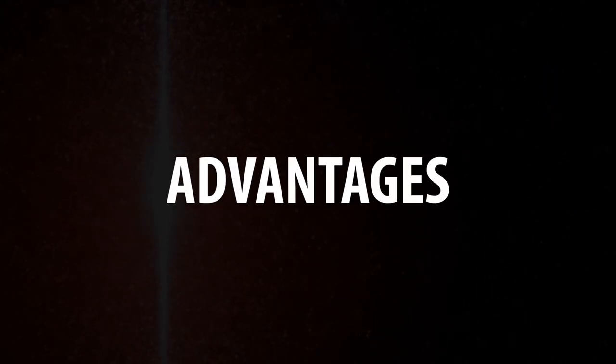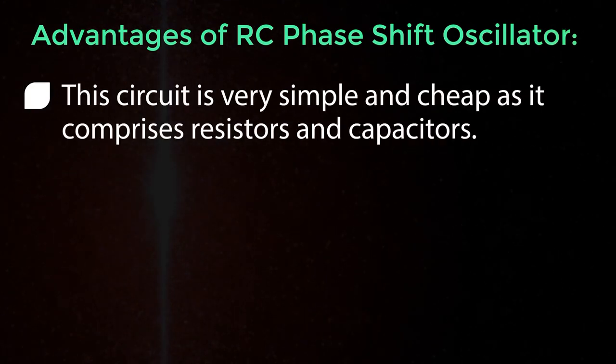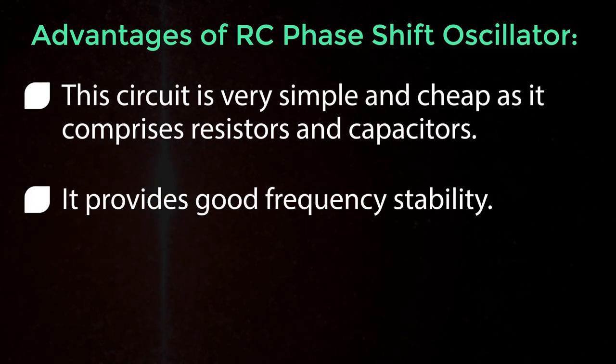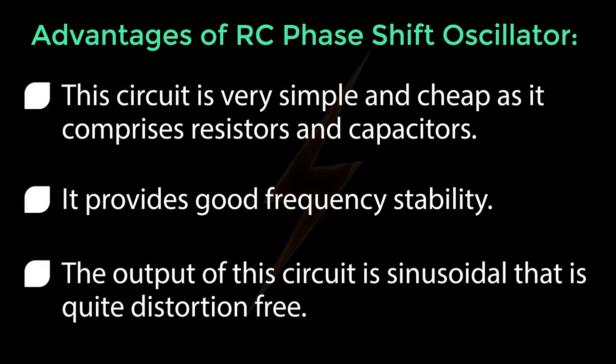Let's look into the advantages of RC phase shift oscillator. This circuit is very simple and cheap as it comprises resistors and capacitors. It provides good frequency stability. The output of this circuit is sinusoidal that is quite distortion free.